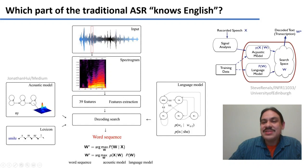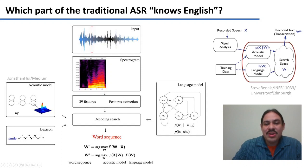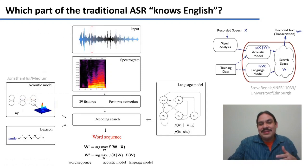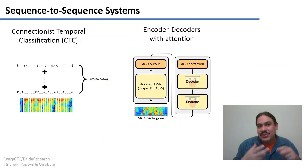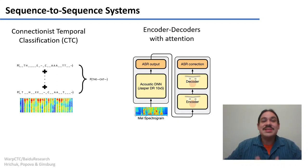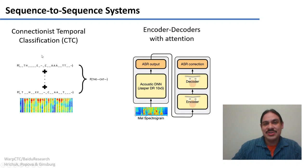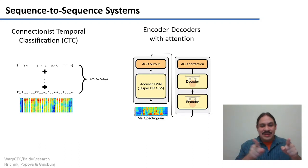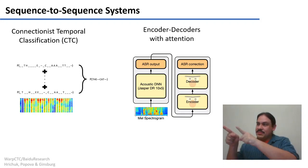Those two elements have some knowledge of the target language, and we combine that knowledge to produce a prediction. However, if we just go from signal to transcription, which part of our deep learning system is going to know the language? There are two answers to that question, and those are the main types of sequence-to-sequence speech recognition systems. We could use Connectionist Temporal Classification, or CTC, which maps a string of phone outputs and assigns them a probability of being a certain orthographic word.